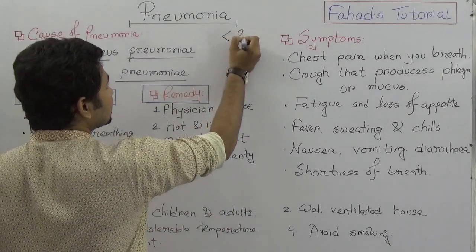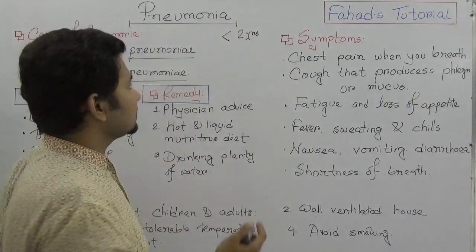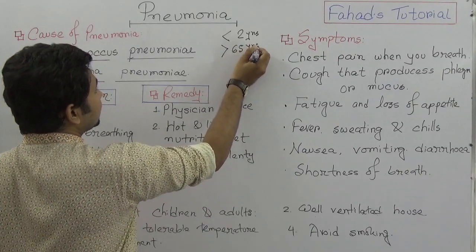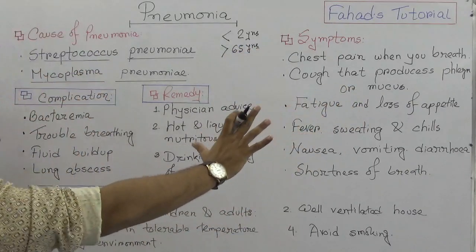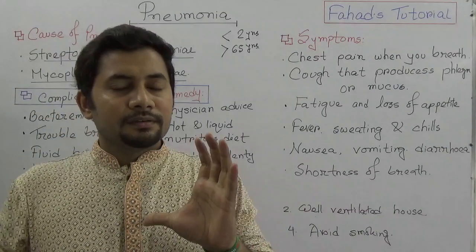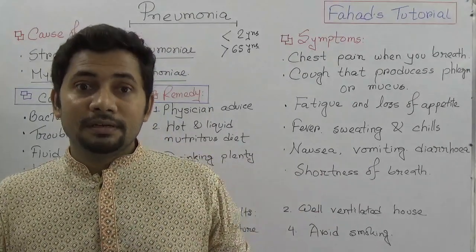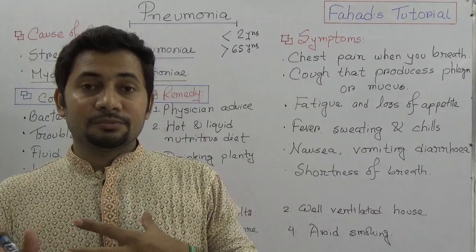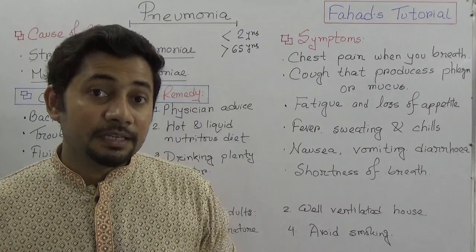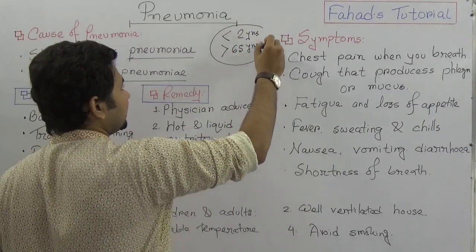Pneumonia is very common in infants — those who are less than two years old — and in old age people, those more than 65 years of age. These groups are at higher risk, meaning they have a greater probability of getting infected by pneumonia.